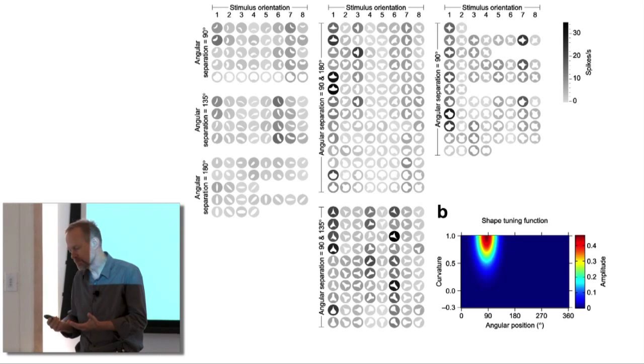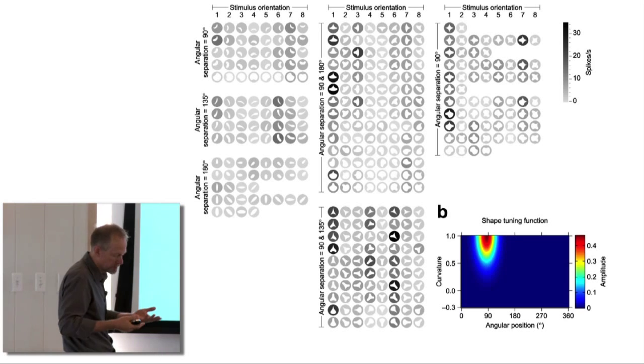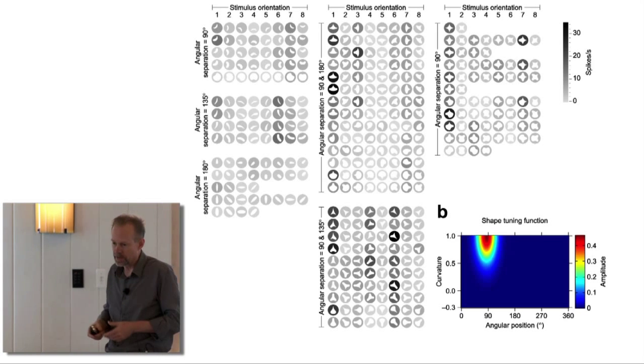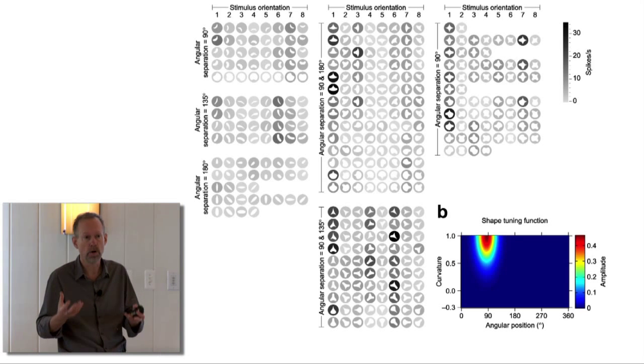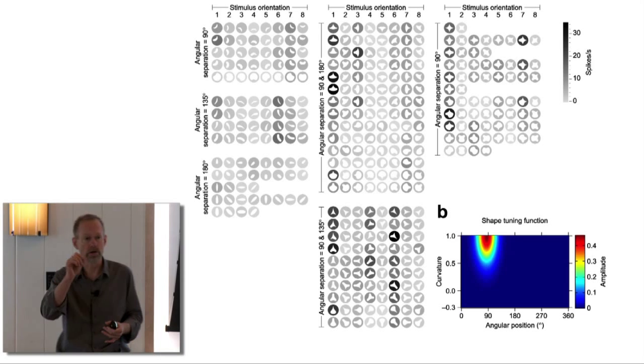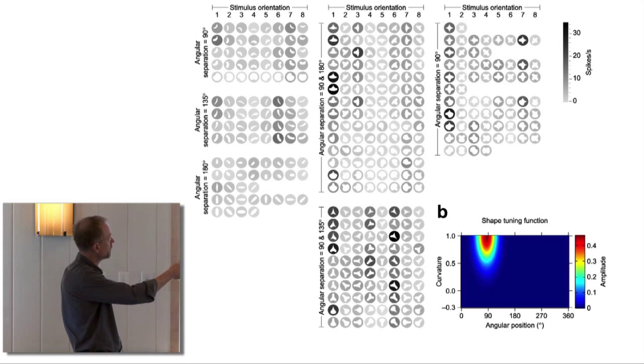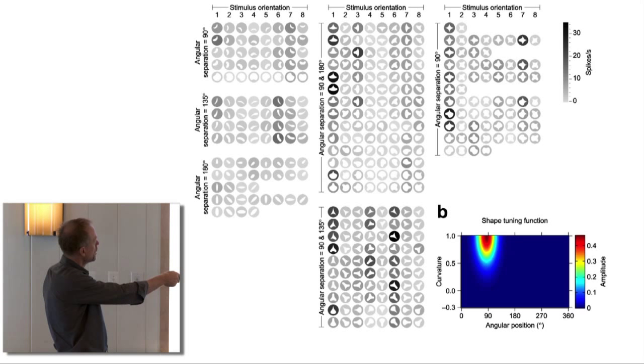We've never seen that even if we go all the way to anterior IT. There's a wide range of stimuli that evoke maximal responses from cells. Cells are, instead of responding to global shape, responding to something less than global shape, something substructural. If you look at the objects with dark or black backgrounds long enough, what you'll discover is their common factor is they've got sharpish convex curvature near the top of the shape.